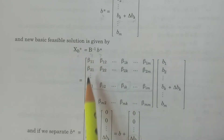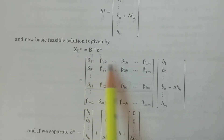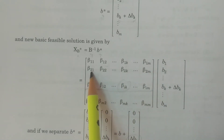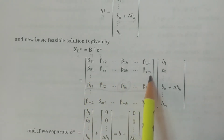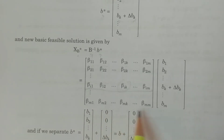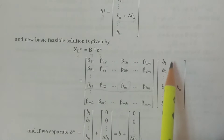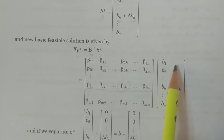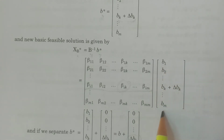B⁻¹ is written with elements: first row β₁₁, β₁₂, ..., β₁k, ..., β₁m; second row β₂₁, β₂₂, ..., β₂k, ..., β₂m; and so on, with the ith row βi₁, βi₂, ..., βik, ..., βim; and last row βm₁, βm₂, ..., βmk, ..., βmm. And B star, the new right-hand side constant vector, has components B1, B2, ..., Bk plus delta Bk, ..., Bm.